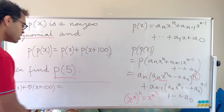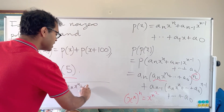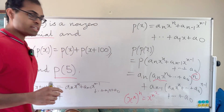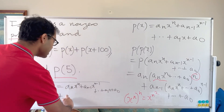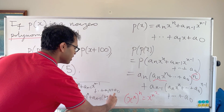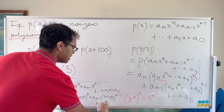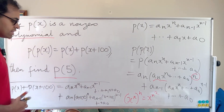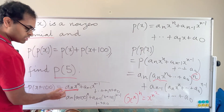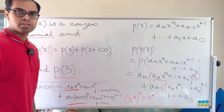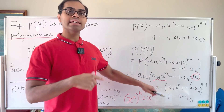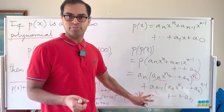If we expand out p(x) + p(x+100), we get a_n x^n + a_{n-1} x^{n-1} + ... + a_1 x + a_0 plus a_n(x+100)^n + a_{n-1}(x+100)^{n-1} + ... + a_1(x+100) + a_0. The degree of this expression is n — there's no term of degree higher than n, whereas p(p(x)) has highest degree n².